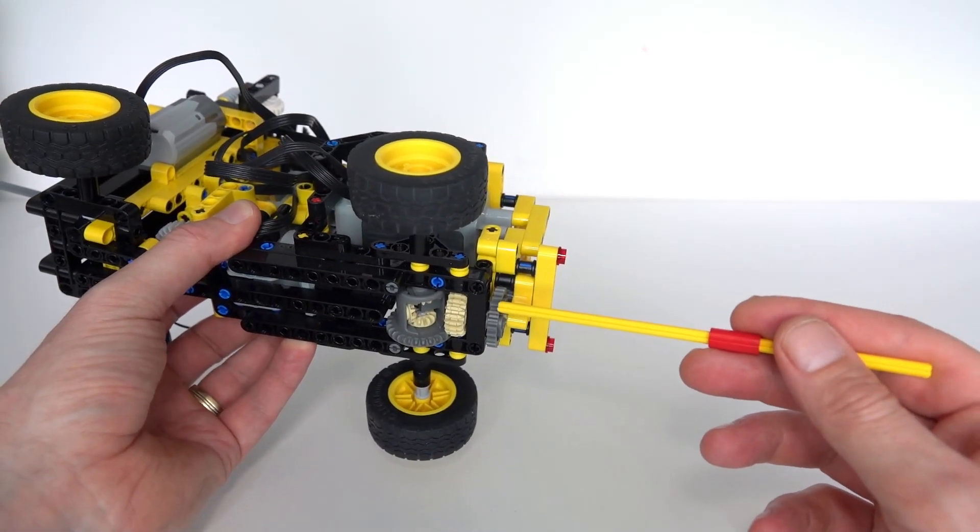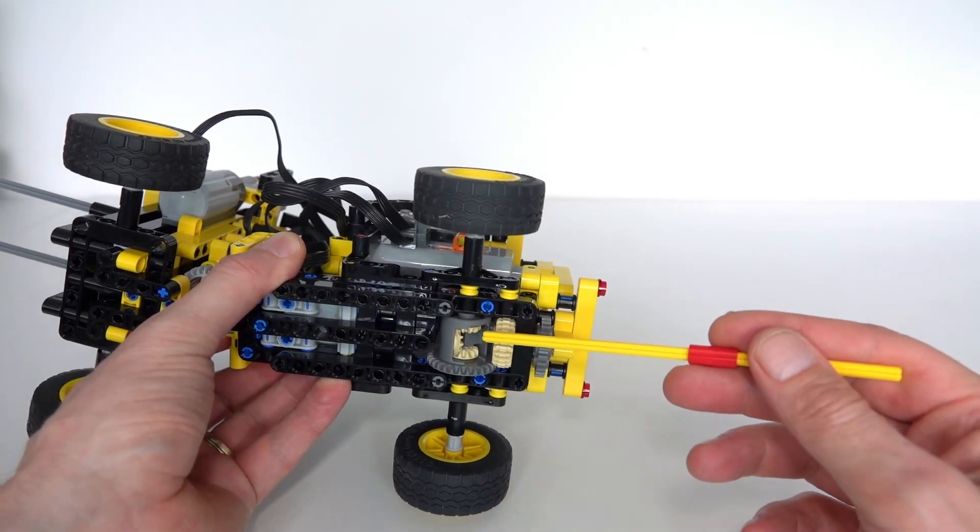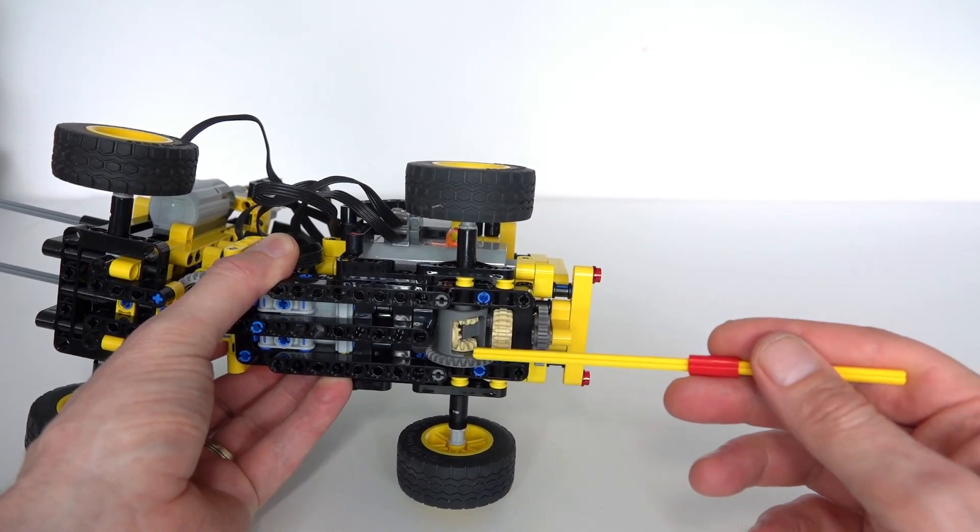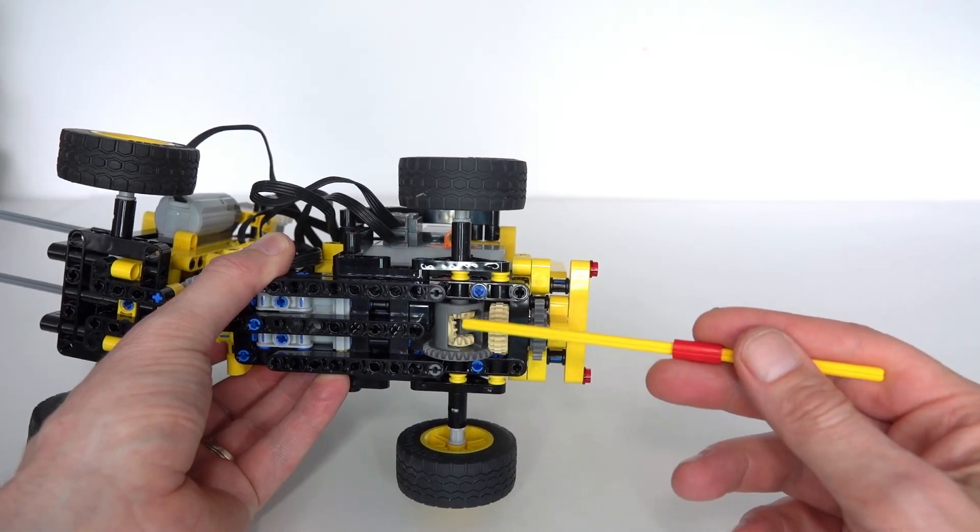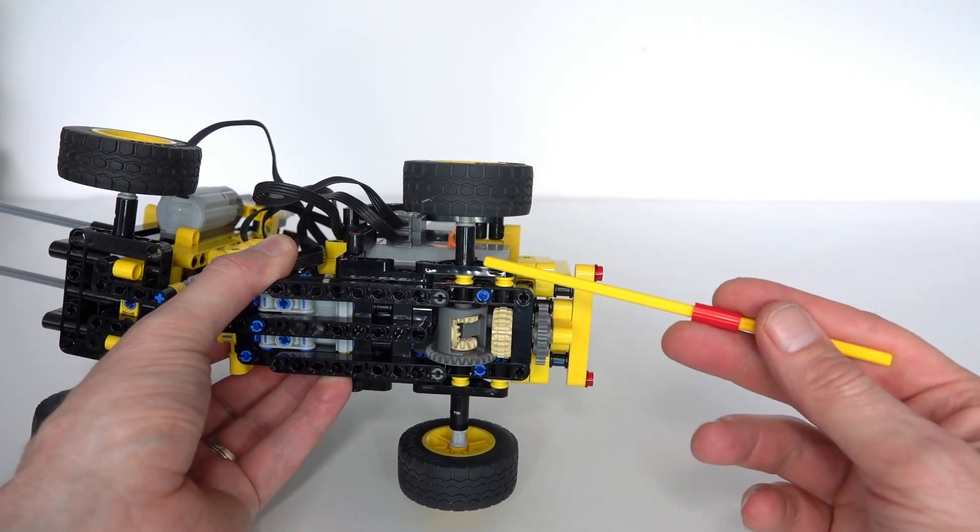So it's an eight tooth driving a 24 tooth, and then that 24 tooth is connected to a 20 tooth gear that then connects onto the 28 teeth of this differential. And the differential of course connects straight onto the rear axles.